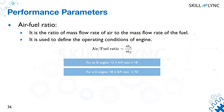Air-fuel ratio is the ratio of air to fuel present inside the engine. We must supply a lot of air for oxidation and combustion to occur. For SI engines the air-fuel ratio ranges between 12 to 18, and for CI engines it ranges from 18 to 70.